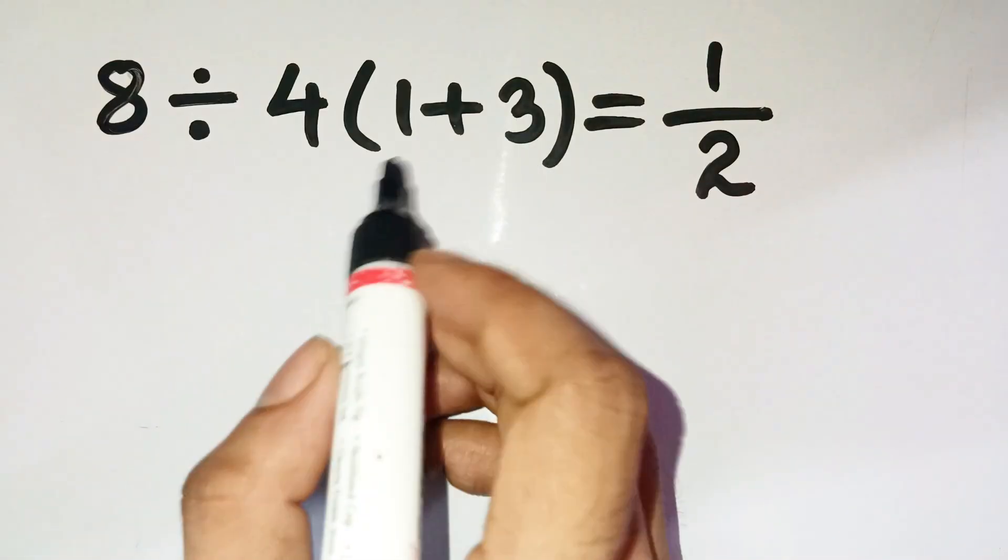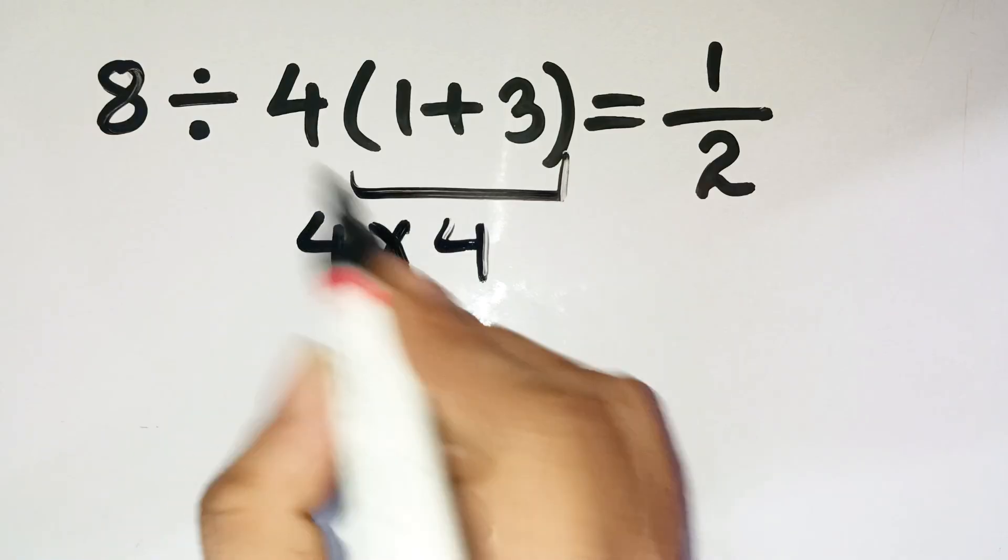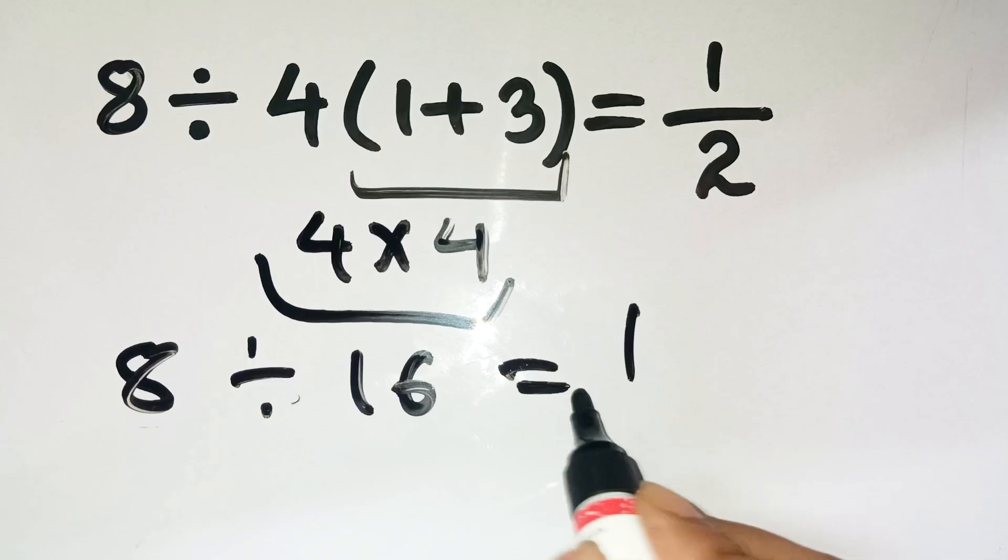Most people go straight to the parentheses, 1 plus 3 equals 4, then multiply that 4 by the outside 4, giving 16, and finally, 8 divided by 16 equals one half. Boom, done.